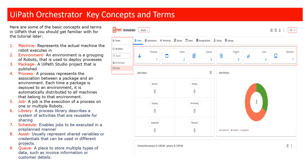What is a job? A job is nothing but an instance of a process. Whenever you trigger a process to run, it is called a job. A job can execute on one robot or multiple robots, depending on what you configured at runtime.